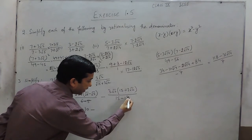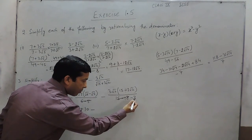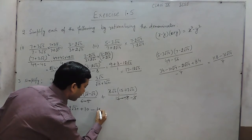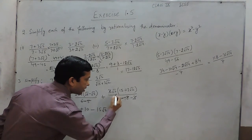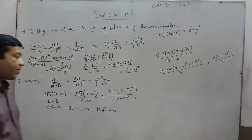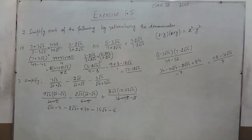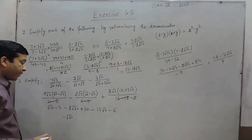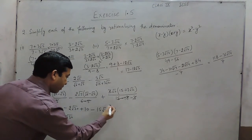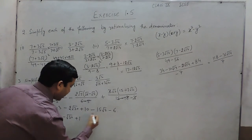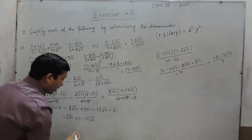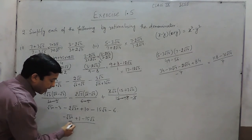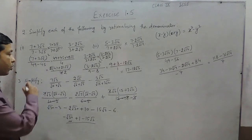The denominator here is minus 3. Taking the minus sign outside makes it positive, and 3 cancels, leaving 15 root 2 minus 3 root 6. So combining all terms: root 30 and minus 2 root 30 can be written as minus root 30. Then minus 3 plus 10 minus 6 becomes plus 1, and the remaining term is minus 15 root 2. This cannot be simplified further into the form of root 2, so this is the final answer for question number 3.